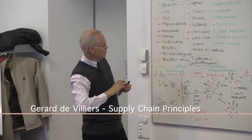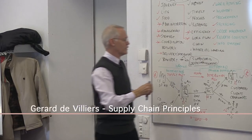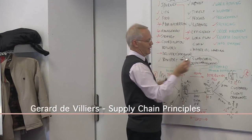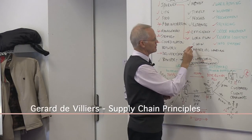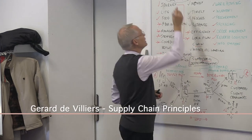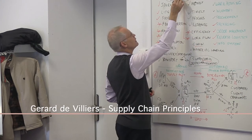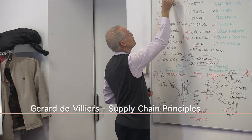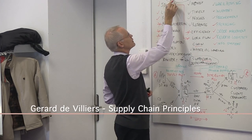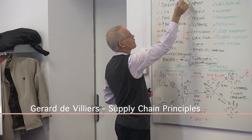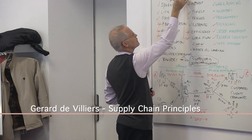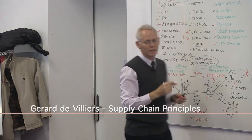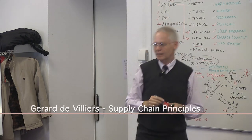And then finally — the chain. Yes, I love it — supply chain. A supply chain has got a couple of links; there are your links in your supply chain. And by the way, the strength of your supply chain is the strength of the weakest link.